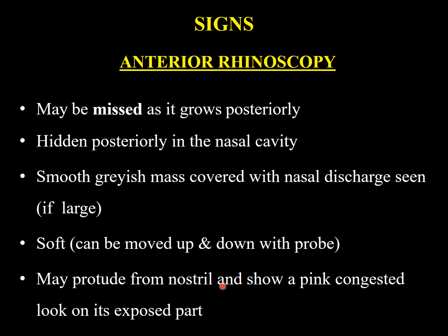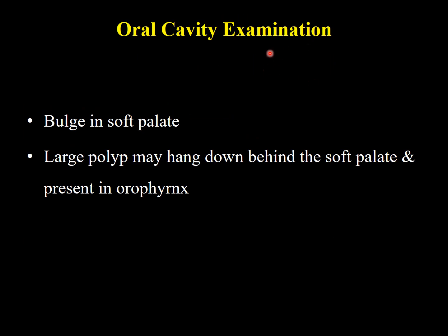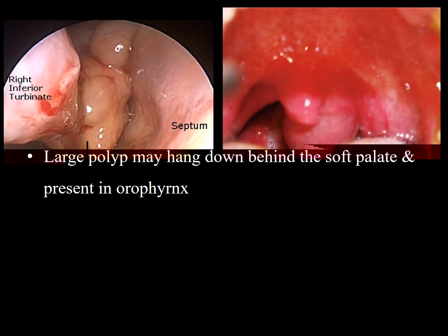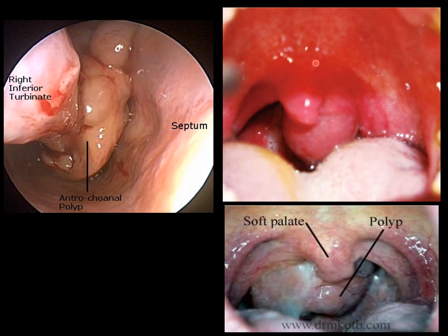The polyp may protrude from the nostril and show a pink congested appearance on its exposed part. On oral cavity examination, a bulge in the soft palate may be seen. A large polyp may hang down behind the soft palate and uvula and present in the oropharynx, as visible in the demonstrating picture showing the uvula, soft palate, and the polypoidal mass hanging in the oropharynx.